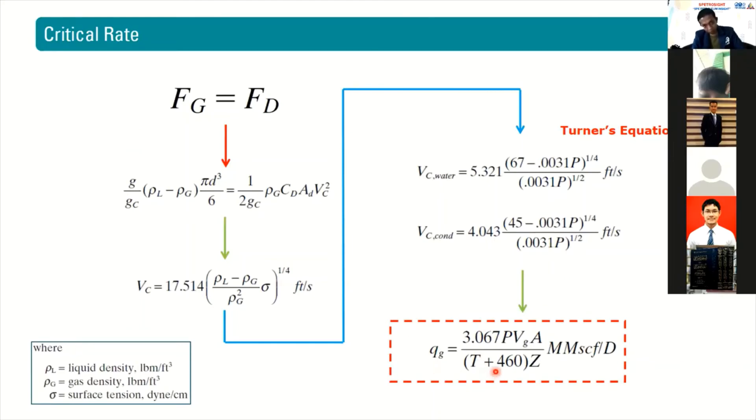This is the equation to calculate the critical flow rate coming from the Turner velocity. This is one of the most popular equations for determining the critical rate. From Turner, we go to flow rate.